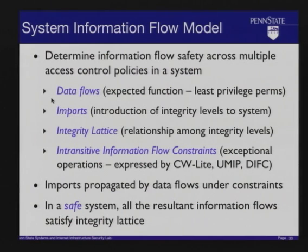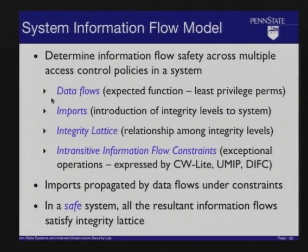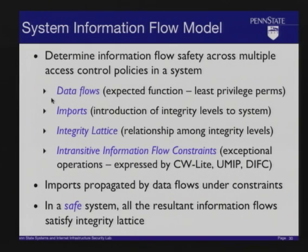We have an integrity lattice — the policy that should be met by the system. If the system is ideal, it would satisfy this integrity lattice, like a BIBA policy. We won't exactly meet it — we'll have some exceptions — and then we have intransitive flow constraints, which are our exceptions: cases dealing with these other policy models. In a safe system, all information flows resulting from our data flows with the imports will satisfy the integrity lattice given constraints. For VM systems, we end up with a hierarchical picture: at the top is the VMM policy showing data flows among VMs, then individual OS policies like Windows or Linux, and then individual program policies.